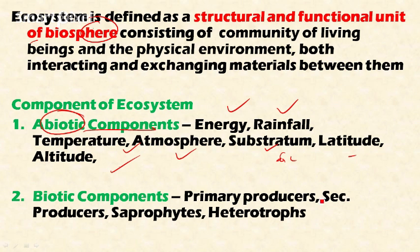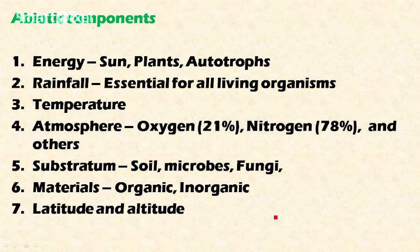Biotic components include primary producers — these are plants, some bacteria, and blue-green algae — and also saprophytes and heterotrophs. Let's now discuss in detail about the abiotic components, that is the non-living components of the ecosystem.